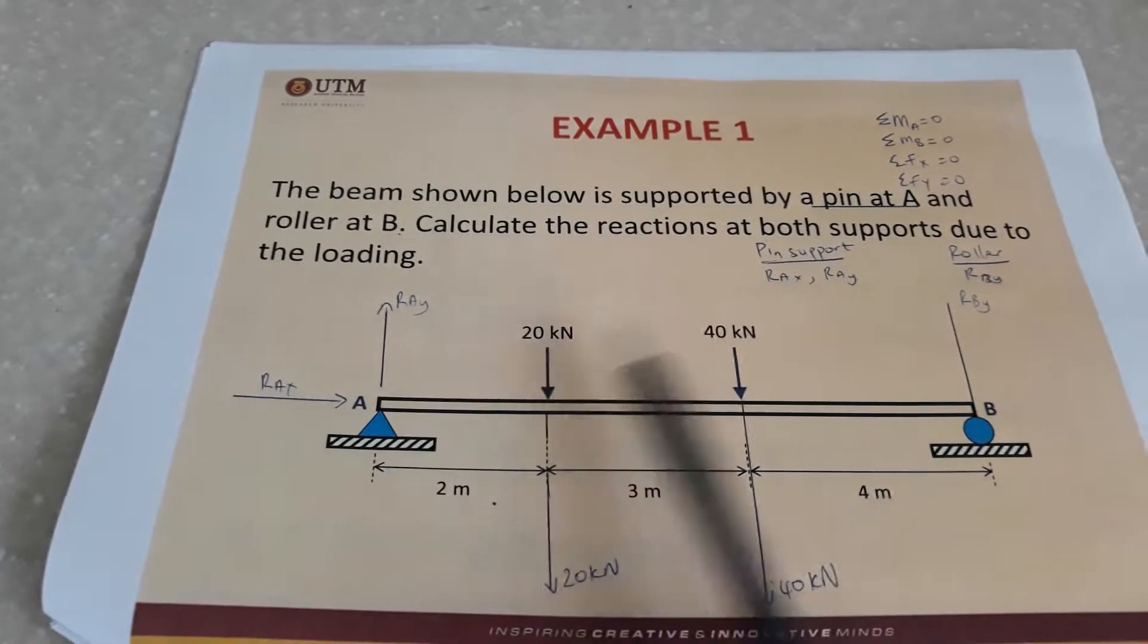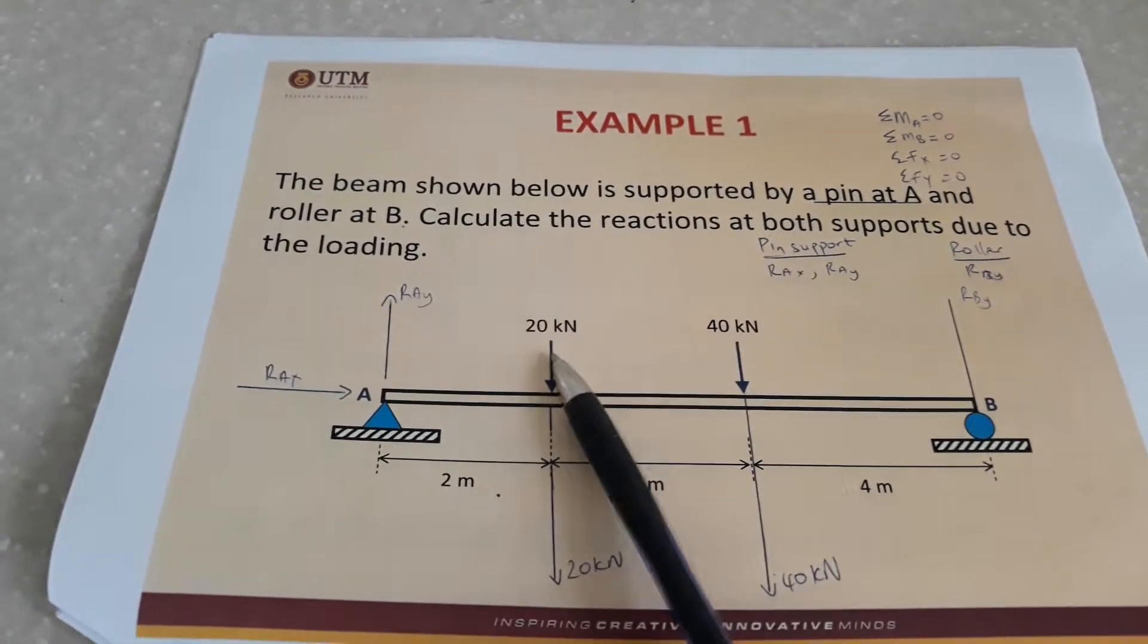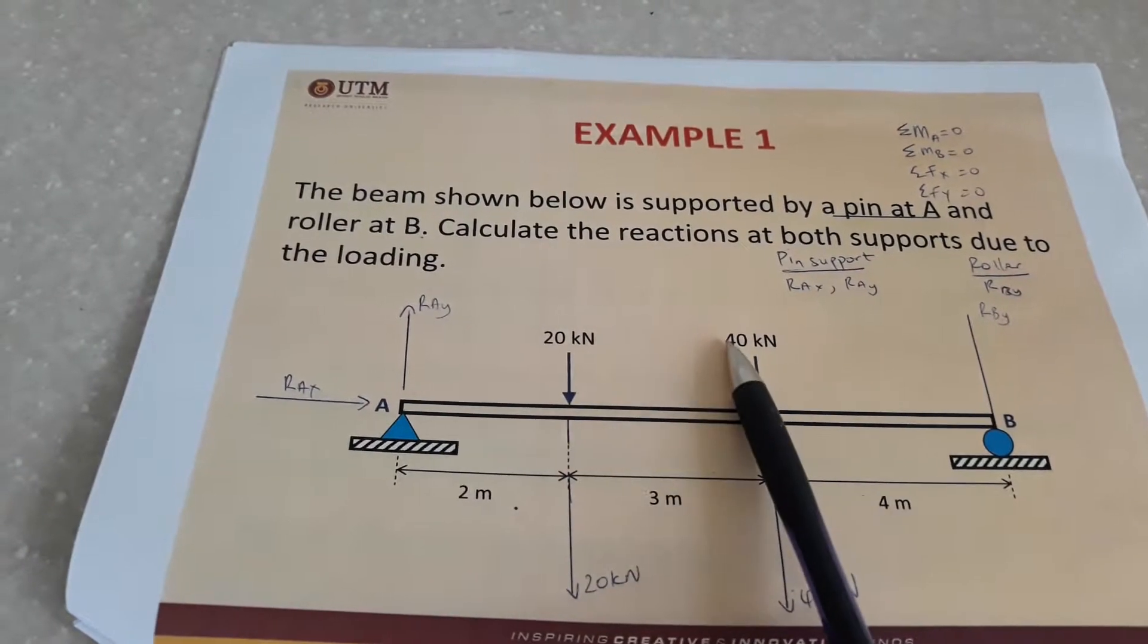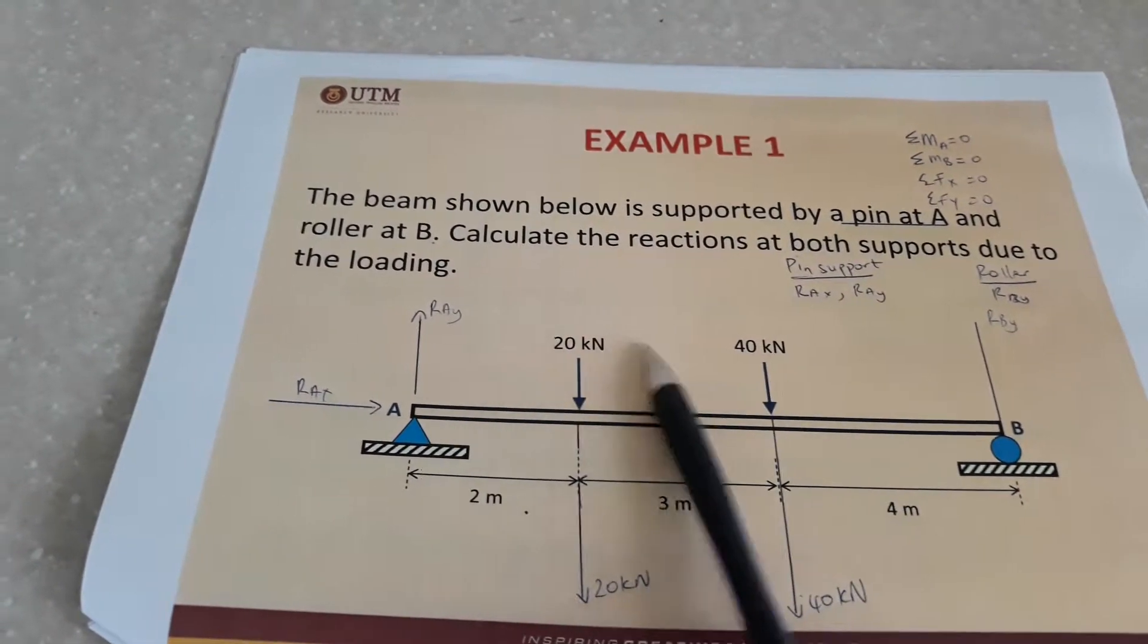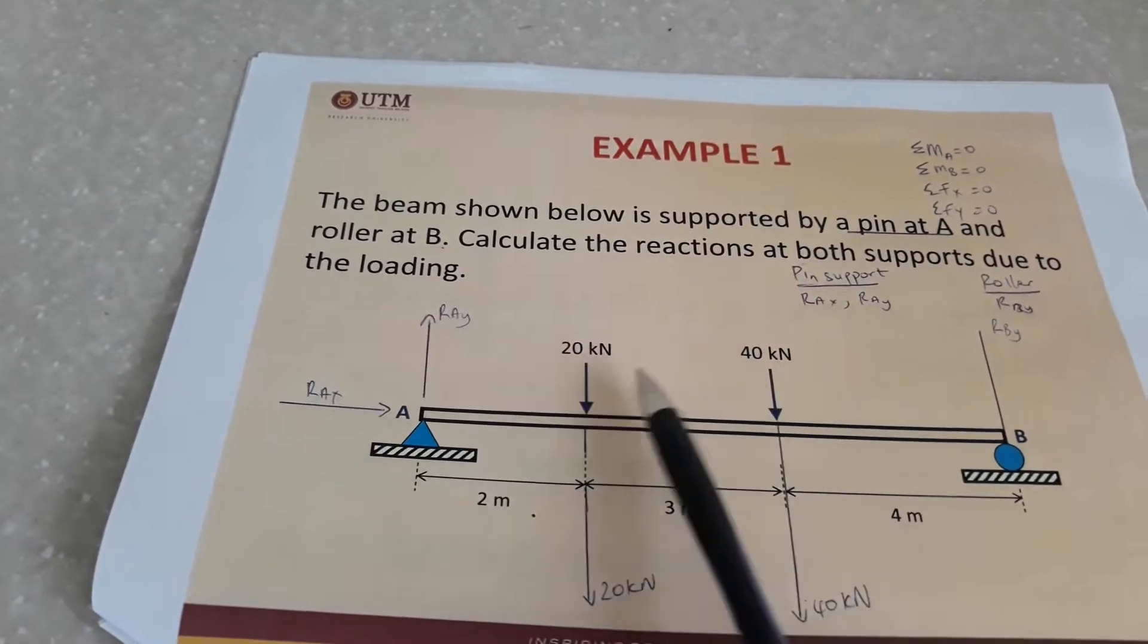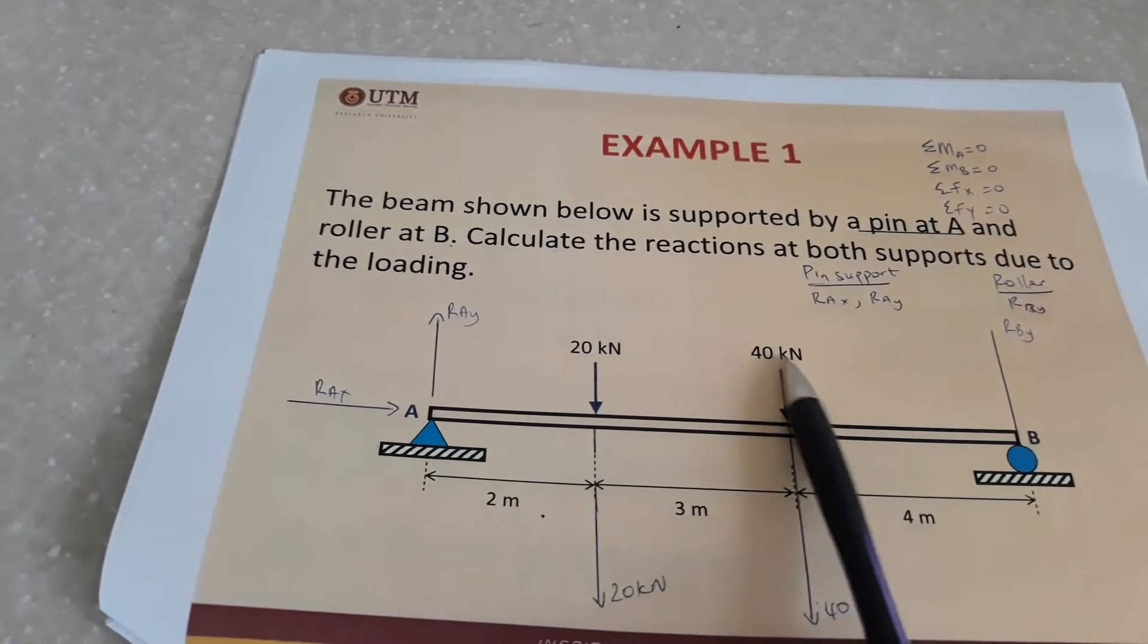Always make sure you take note of the units because sometimes you have them in different units. Sometimes you can have 20 newtons and maybe 4kN. You have to make sure they're both the same. In this case they're both kN.